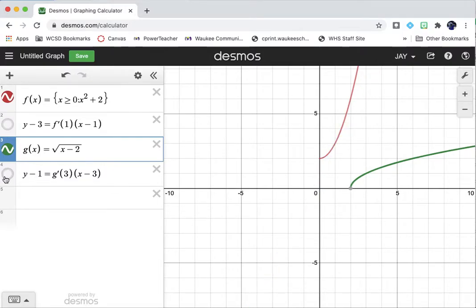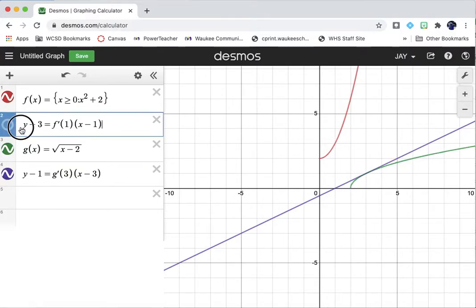And now here's the tangent line at x equals 3 on the inverse. That's the purple line. So what I'm saying is the slope of the purple line and the slope of the blue line, those two are inverses or reciprocals of each other.